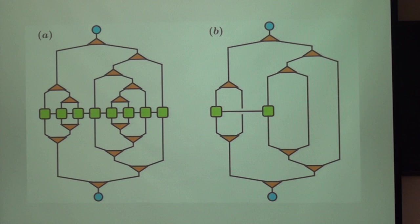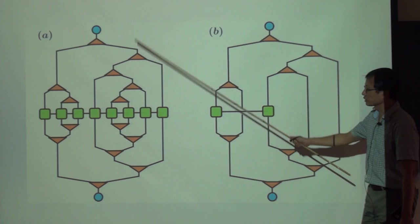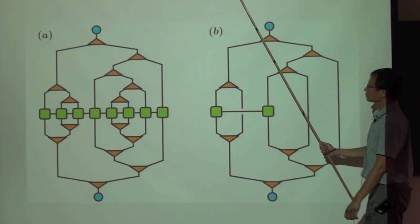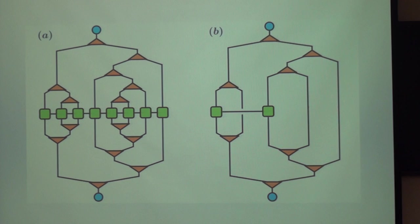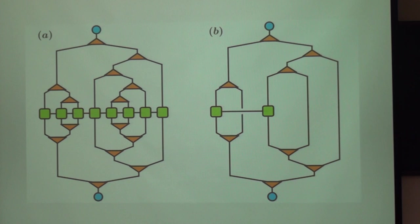If I order this in this way, these are my original matrix product operators and these are the coarse-grained operators. This looks like a tree, so this is a tree tensor network. SDRG can be thought of as a tree tensor network. These are matrices, these are kind of tensors.